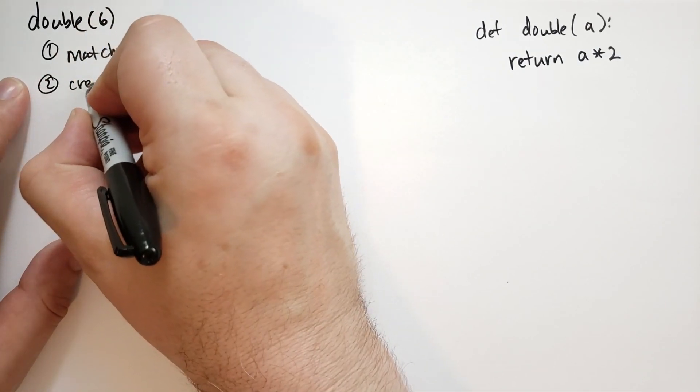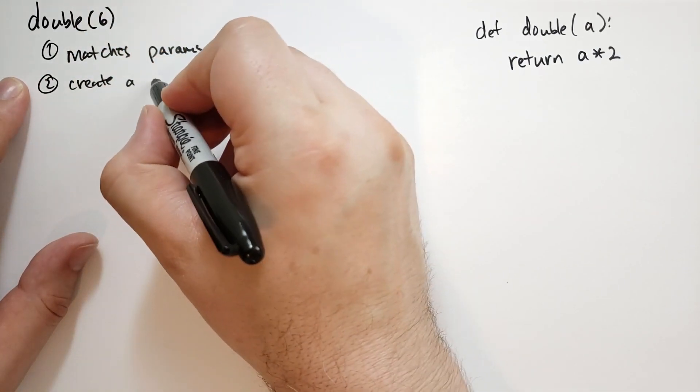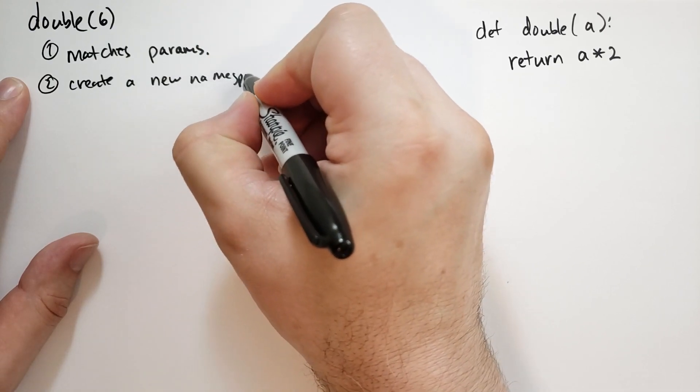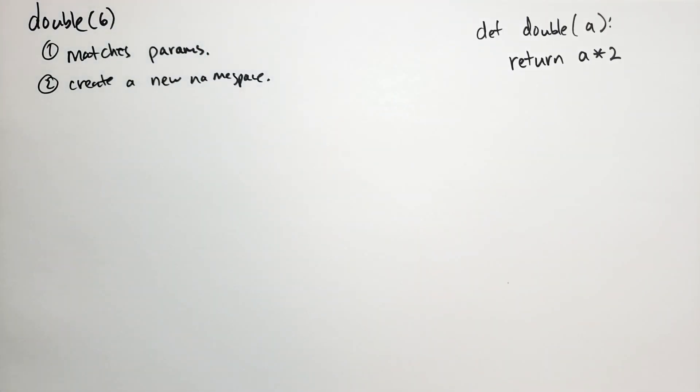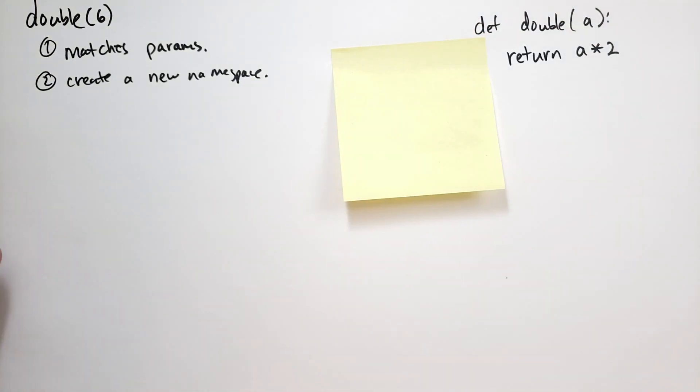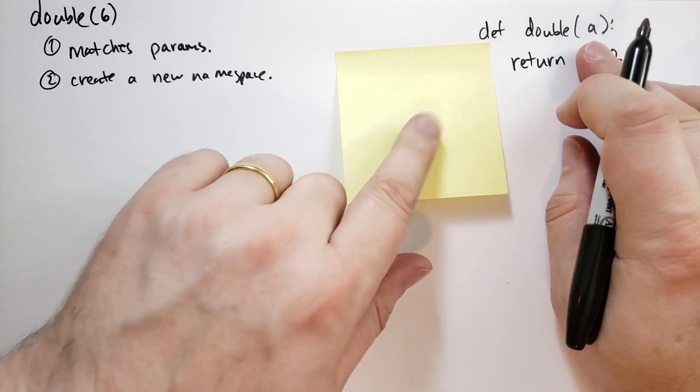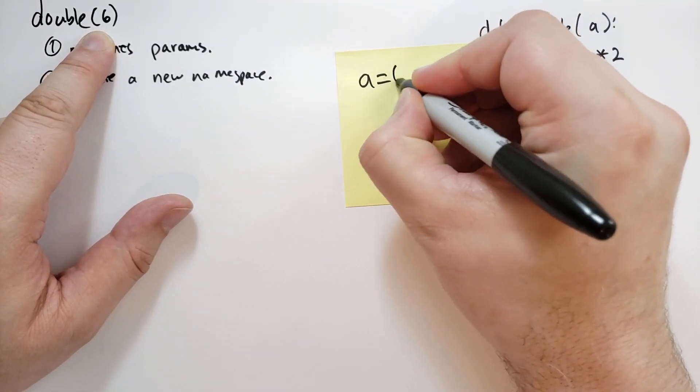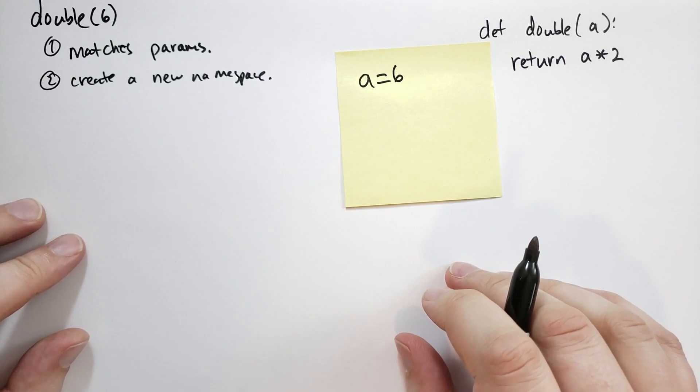Next, it's going to create a new namespace. And I'm going to represent that with the sticky note here. And in this new namespace, it's going to say, look, the parameter name is a, the value is 6. So it's going to create a equals 6.